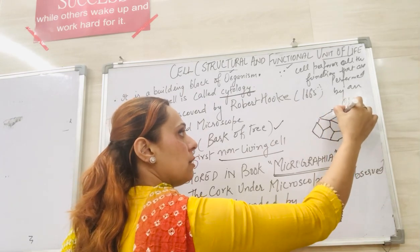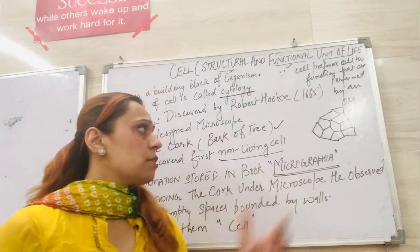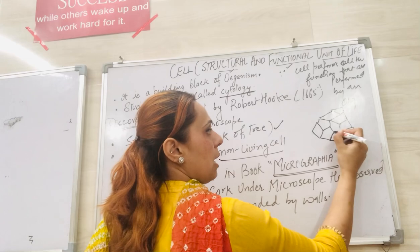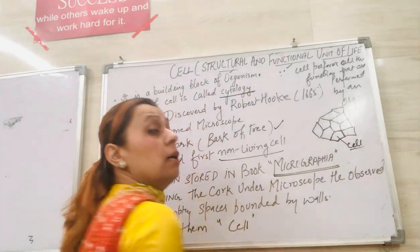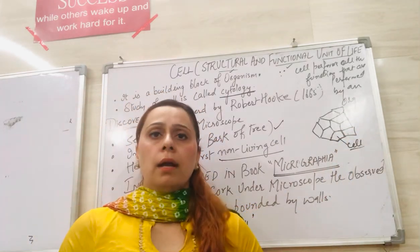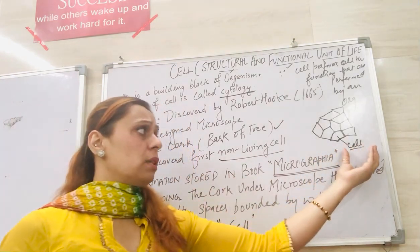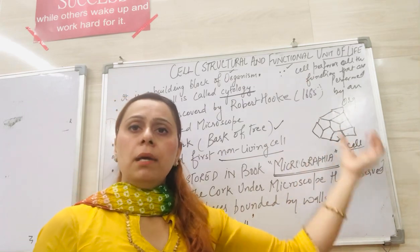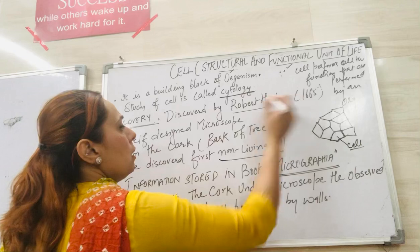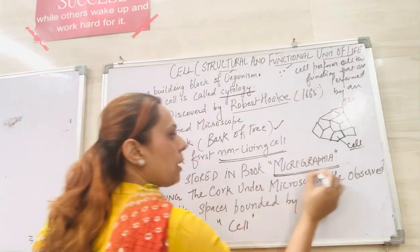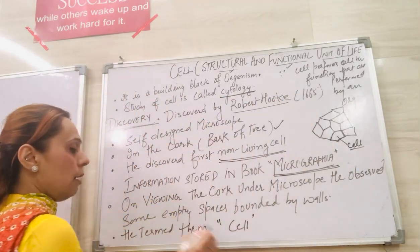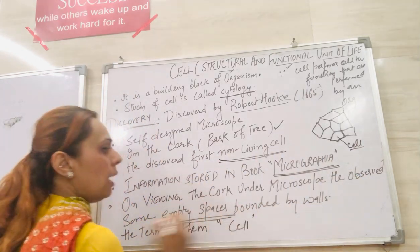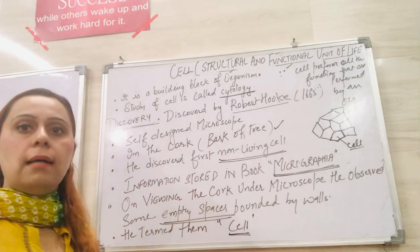He saw that there was an empty space bounded by various walls — so many walls or boundaries. He saw a honeycomb structure, and each single block was called a cell, which means a chamber, a house, or a room — an empty place bounded by walls. He discovered the non-living cell, and this information is in the book Micrographia.